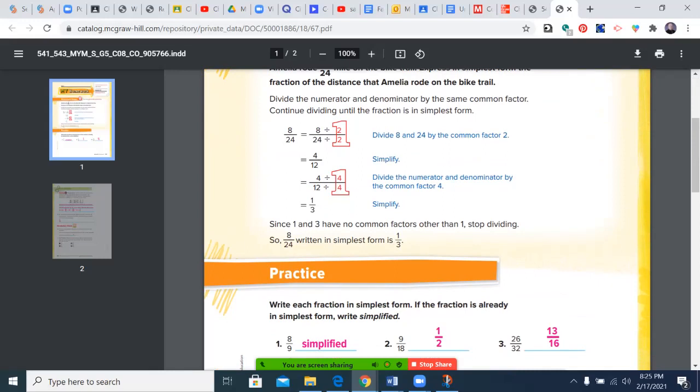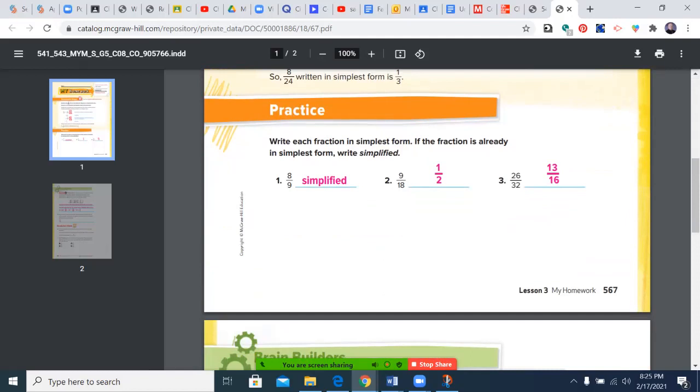Because two over two is a whole. If I cut a cookie in half and give you both pieces, you're eating two halves. Number one, eight ninths—that's simplified. There's nothing that will go into eight and nine other than one.